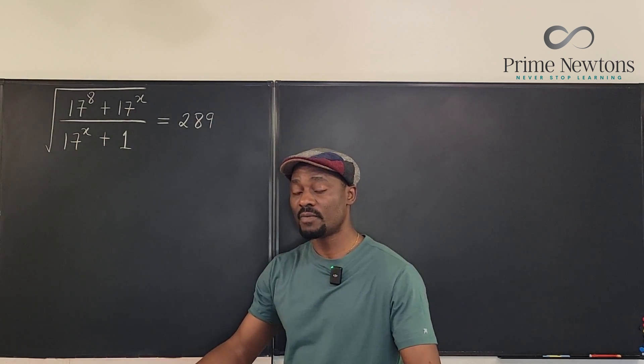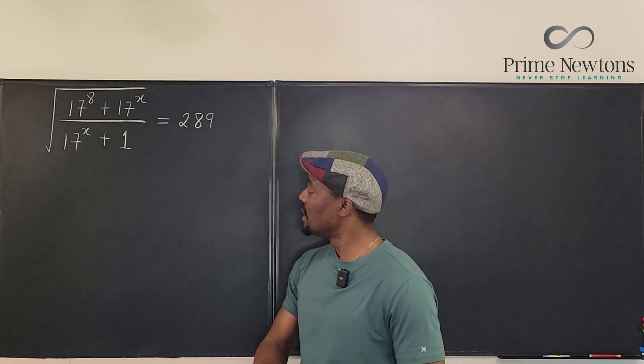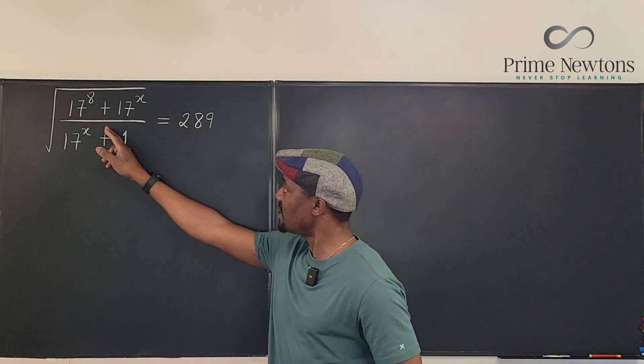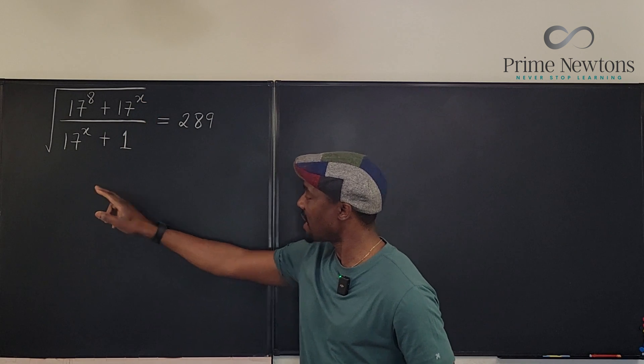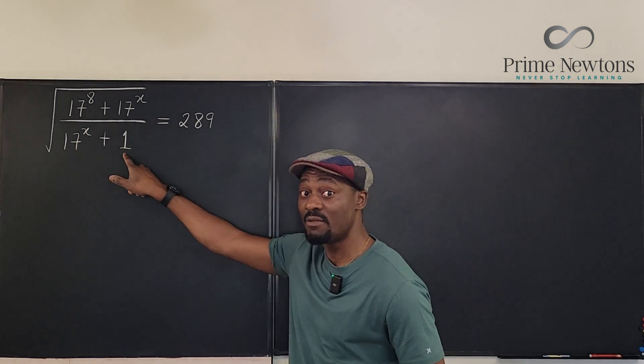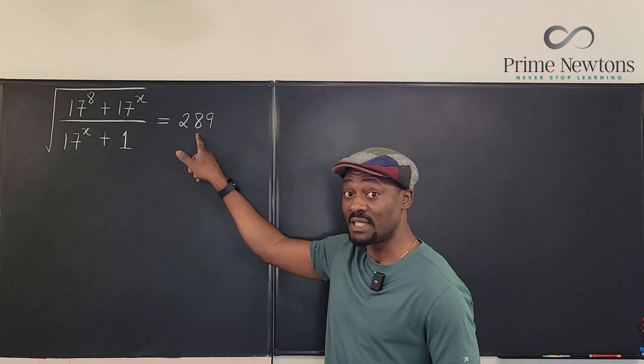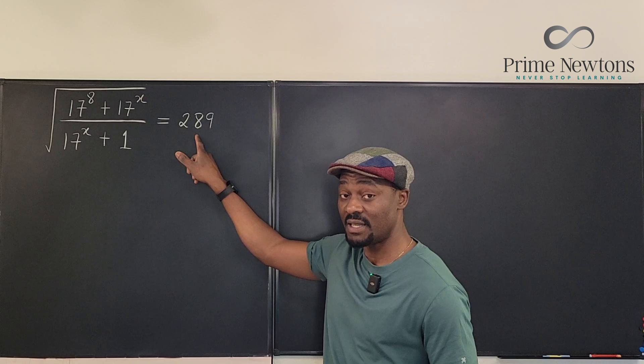So what should you do? Pay attention to everything around the problem. What you have here says 17 to the 8th, 17 to the X, 17 to the X. You can actually write this as 17 to the 0. Can you write this in terms of 17? This is the square of 17.